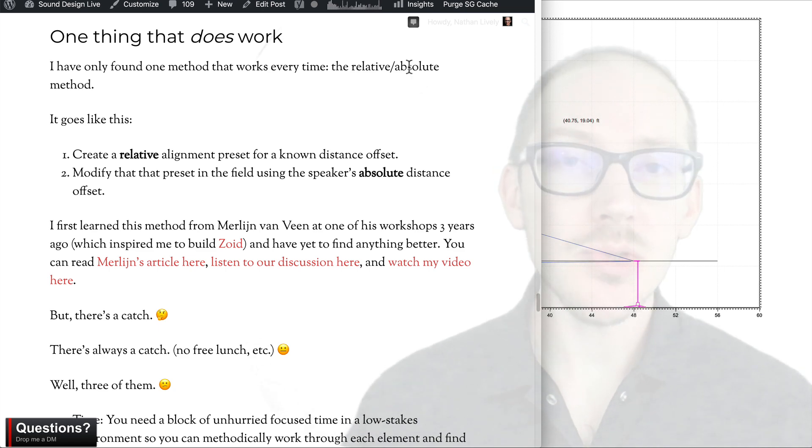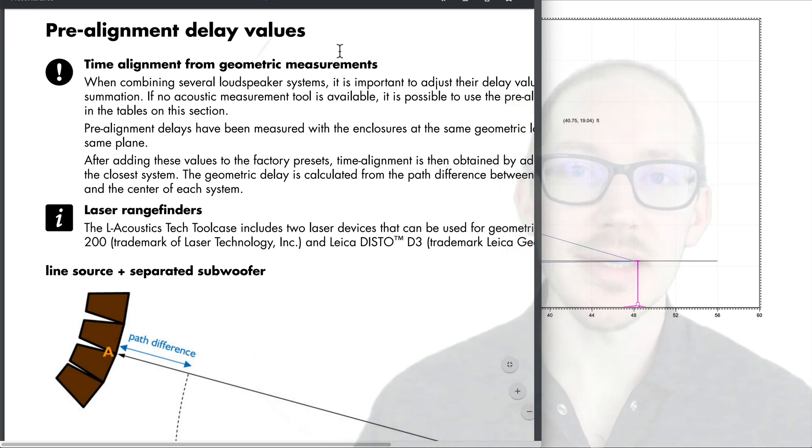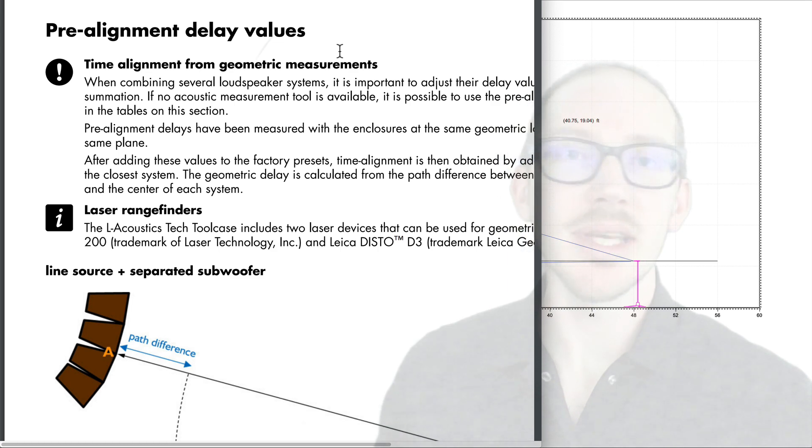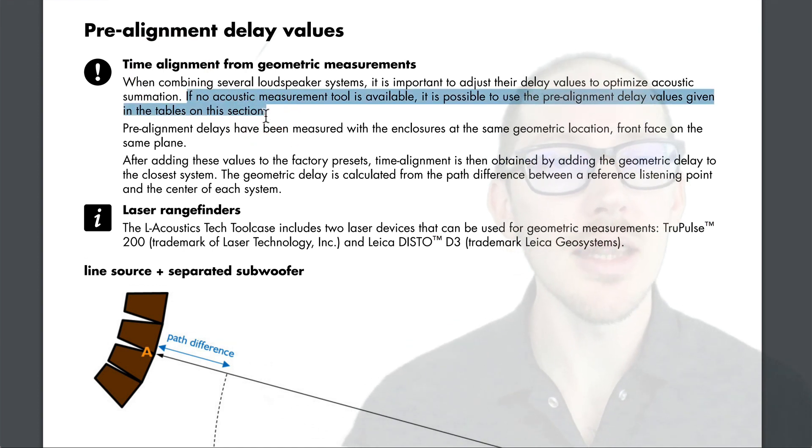So for a more consistent approach, we don't need to look much farther than the L-Acoustics preset guide. They're not the only ones to talk about this method, but I'm using their guide because I think a lot of people are familiar with it and because it spells it out pretty clearly. If we look at the end of the guide, there's a section called pre-alignment delay values. It says if no acoustic measurement tool is available, it's possible to use pre-alignment delay values given in the tables in this section.